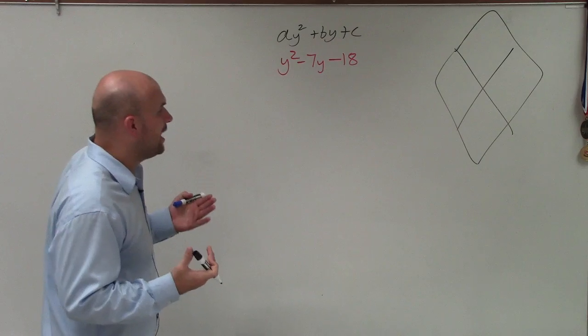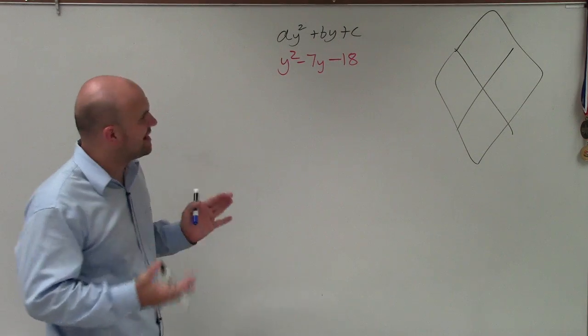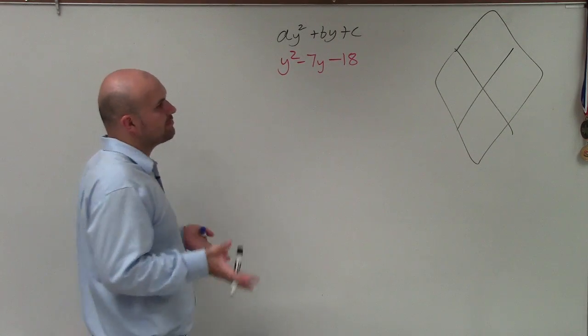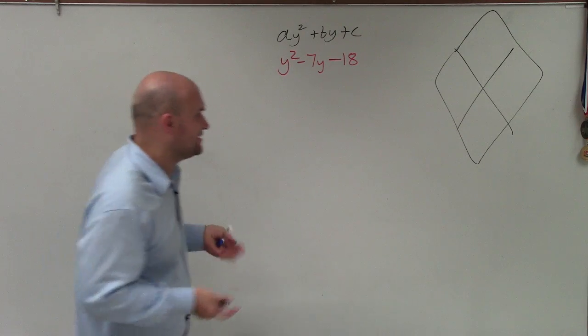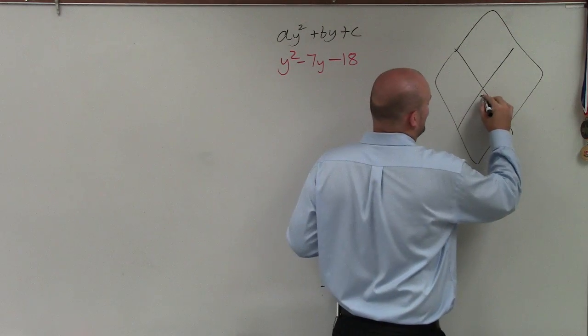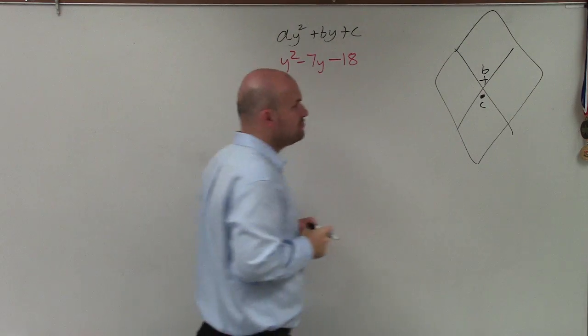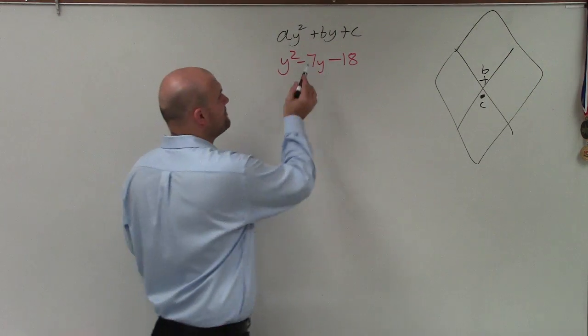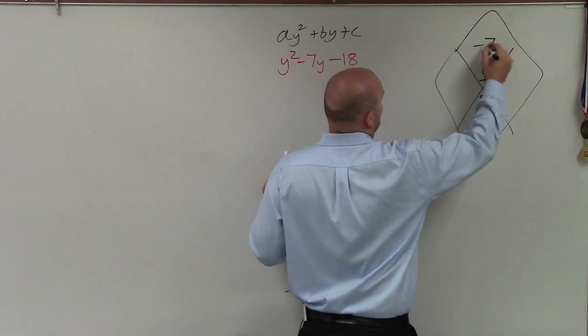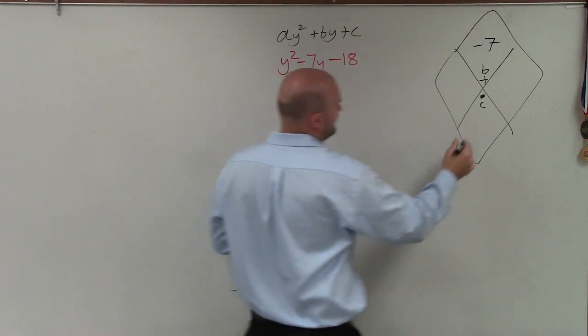So what we want to do when trying to factor using the diamond method is identify two factors that are going to multiply to give us c, but then add to give us our value b. So we write b, which is negative 7 up top, and then we write our c, which is negative 18 on the bottom.